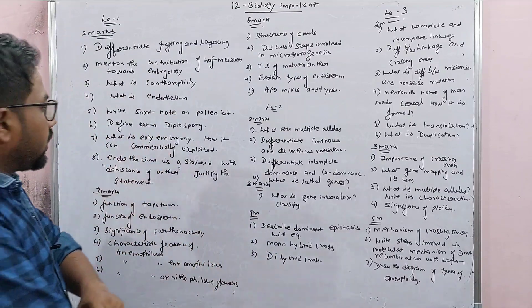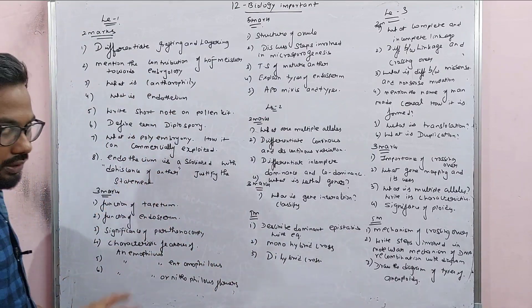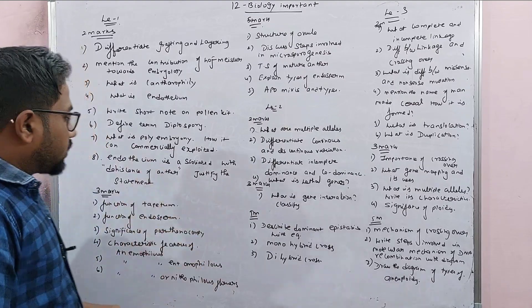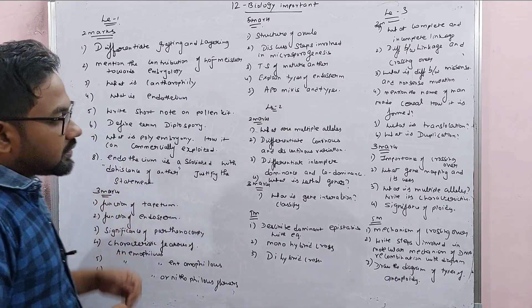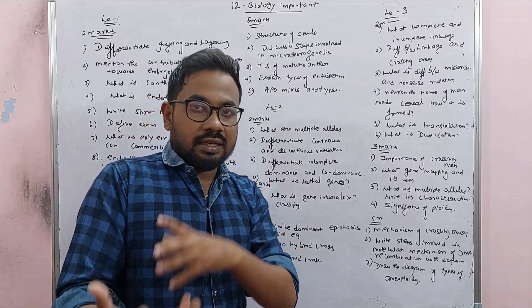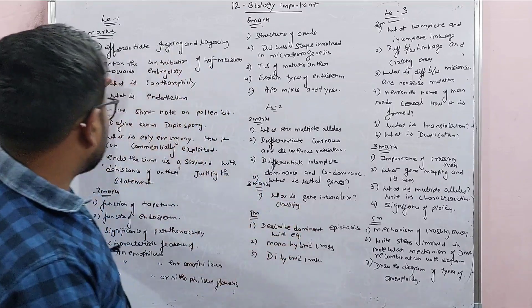What is Polyembryony, how it can be commercially exploited? At least that is polyembryony. Endothelium is associated with dehiscence of anther, justify the statement. This statement is very easy, it is a question 2 Mark.